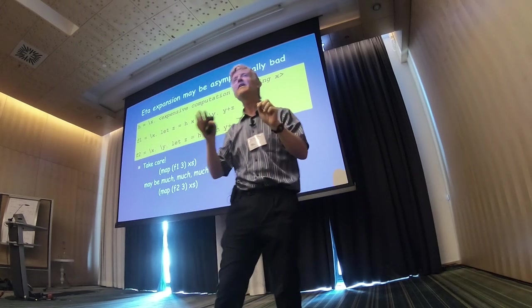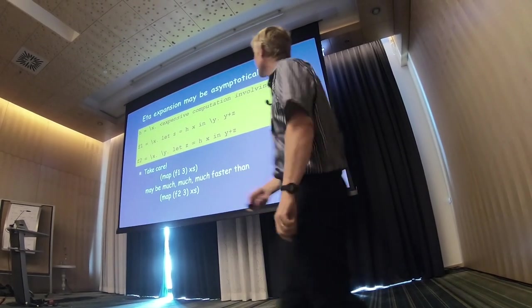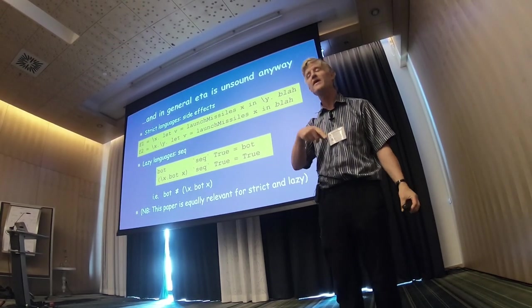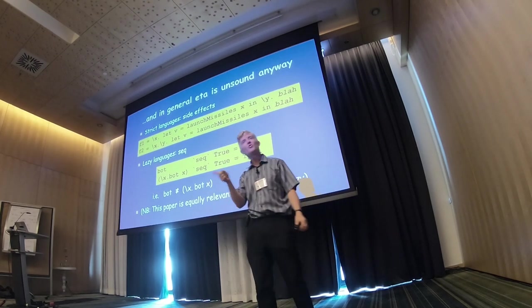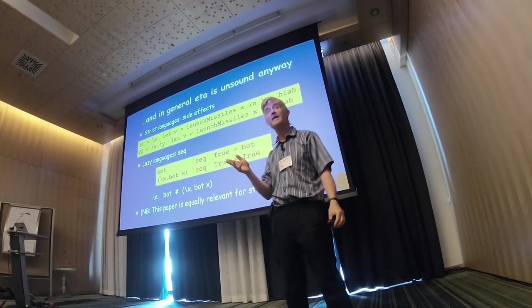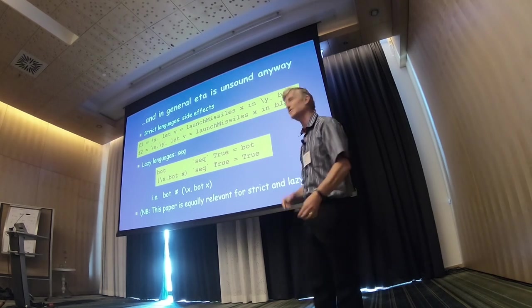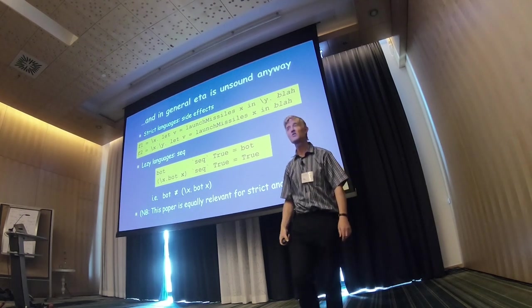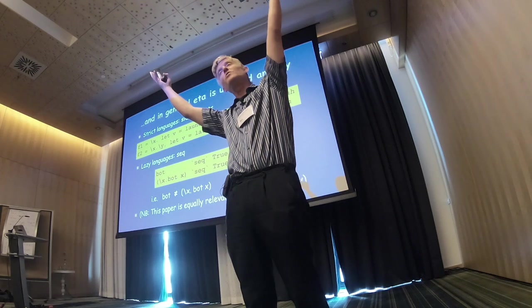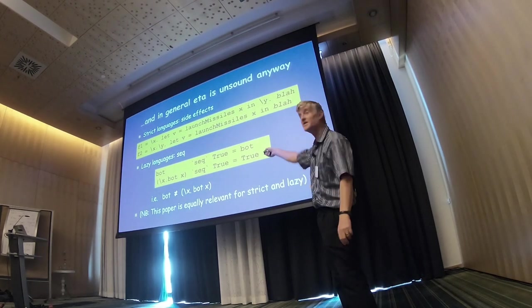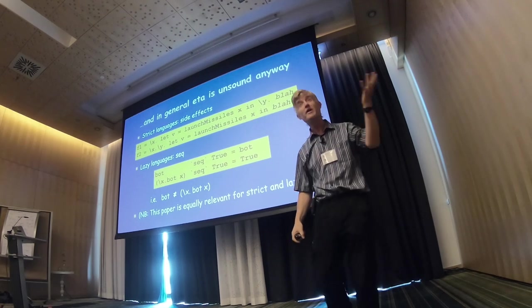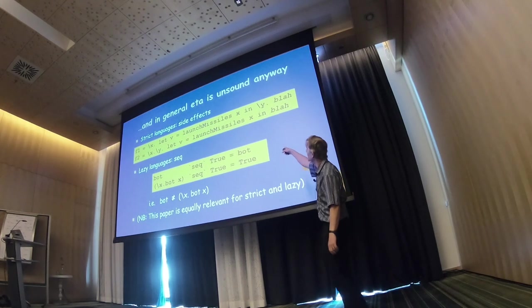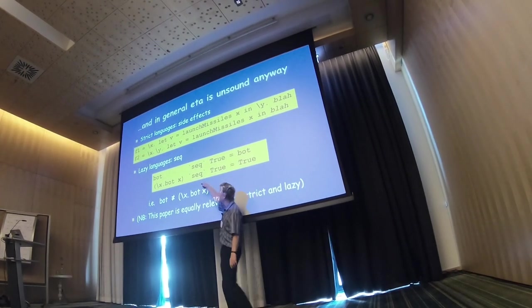Users hate it if the compiler makes their program asymptotically slower. So GHC is very paranoid about doing this. And in any case, it's not even sound in Haskell, or in a call-by-value language. Unusually, this talk is equally applicable to call-by-value languages and call-by-need languages, but for different reasons. So in the case of call-by-value languages, here's a, supposing F1 is let V equal launch the missiles of X, well then, if you evaluate that eagerly, world destruction takes place, whereas if you tuck it inside this extra lambda, it may not, if you only apply F1 to one argument rather than to two. So that's an intentional side effect may be avoided.